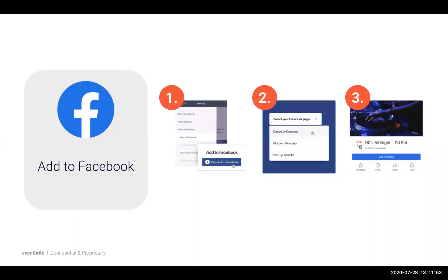So why should you use Eventbrite's Add to Facebook tool instead of just creating an event directly in Facebook? There are two reasons. First, you'll save time because our tool automatically pulls in your event image and event details from Eventbrite to create your Facebook event page in seconds. You can also add co-hosts to your event, like artists, promoters, or venues, so your event can reach a wider audience. Second, you can expand your reach — when you create a Facebook event using our Add to Facebook tool, your event becomes a Facebook official event, which is more likely to show up on Facebook's search and news feeds, bringing your event more exposure overall.